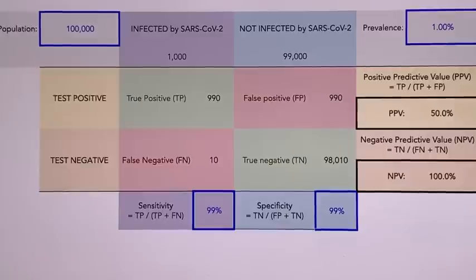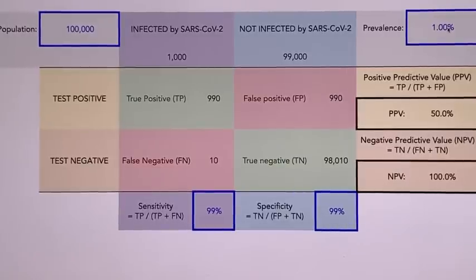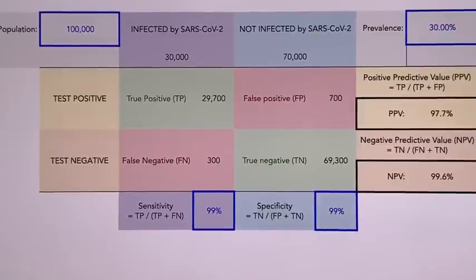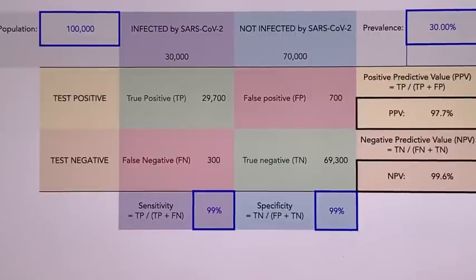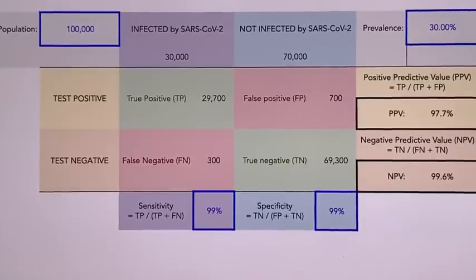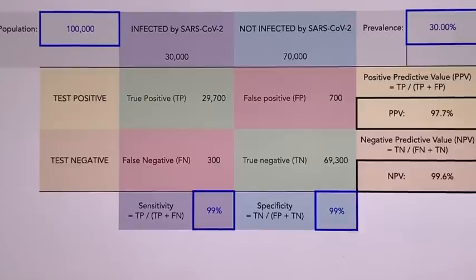The teaching point is: how does this change if prevalence is higher — say 30%? Changing nothing else except that 30% of the population has this condition, look what happens. My negative predictive value is still exceptional, coming down only slightly from ~100% to 99.6%. But more importantly, my positive predictive value has gone way up, from effectively 0% to about 98%. That's possible because the probability of someone being positive is 30% instead of 1% — a 30 times higher chance that a positive test result is real.